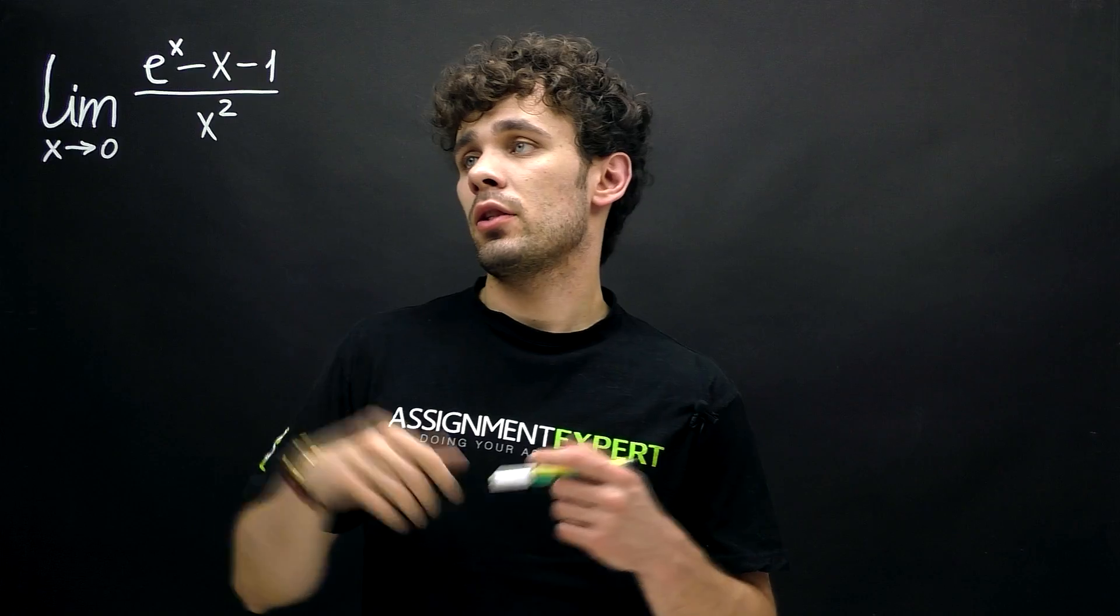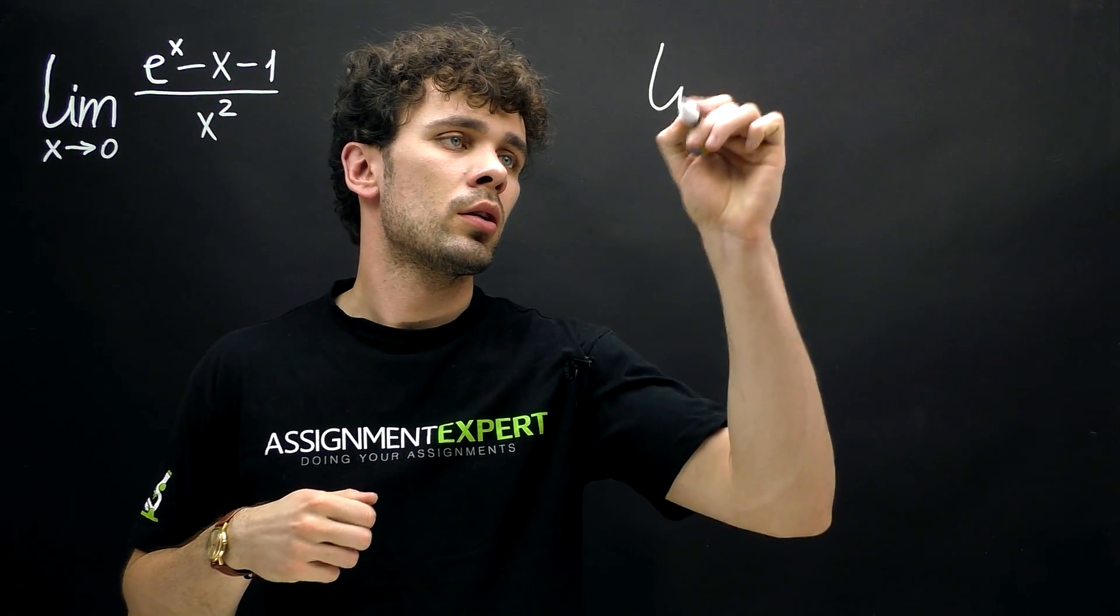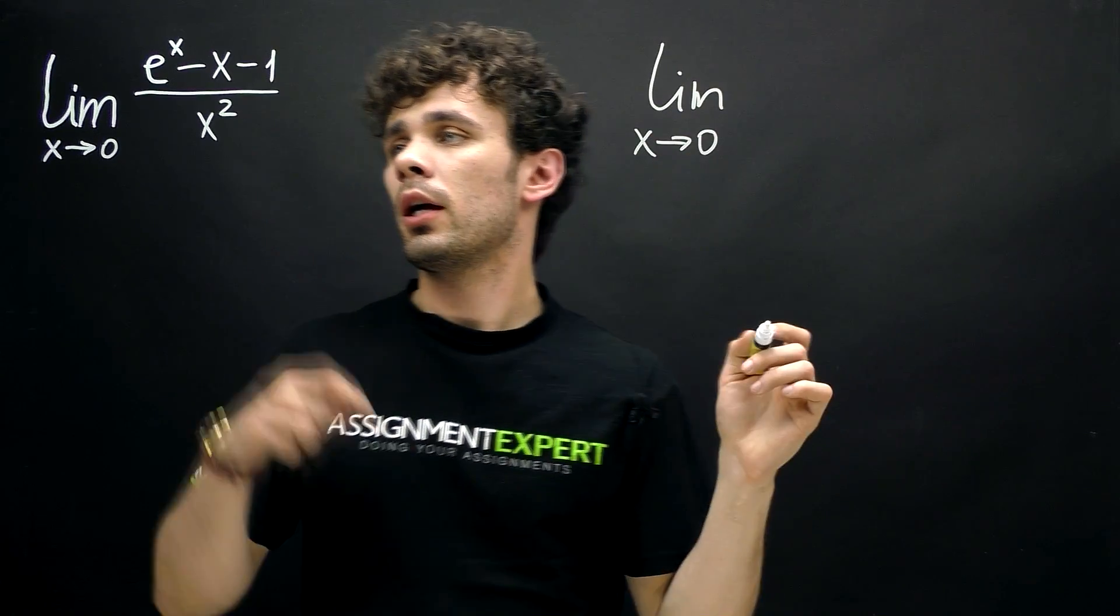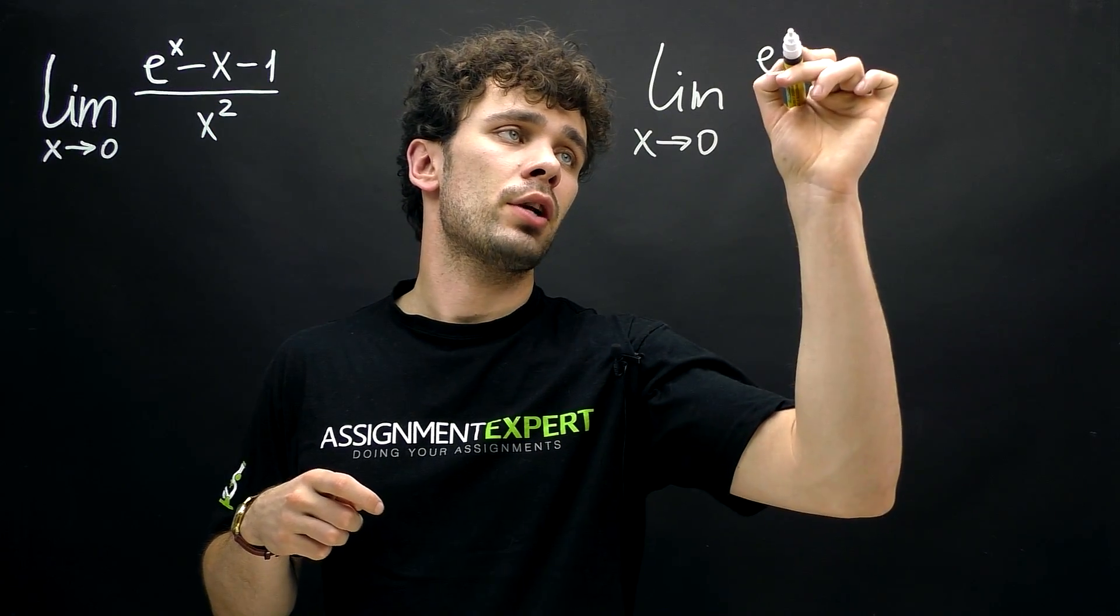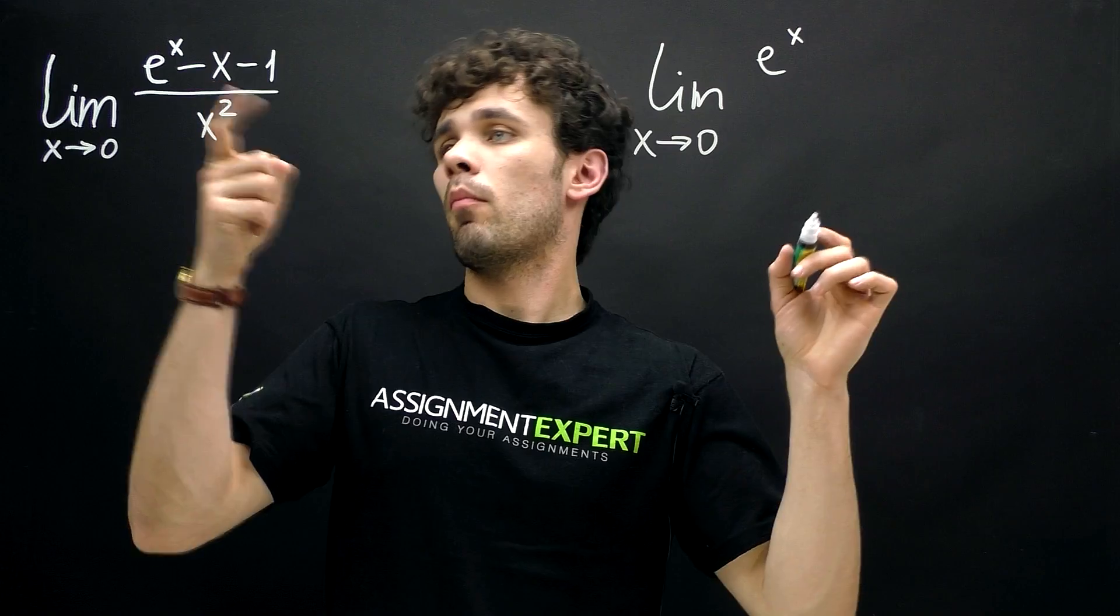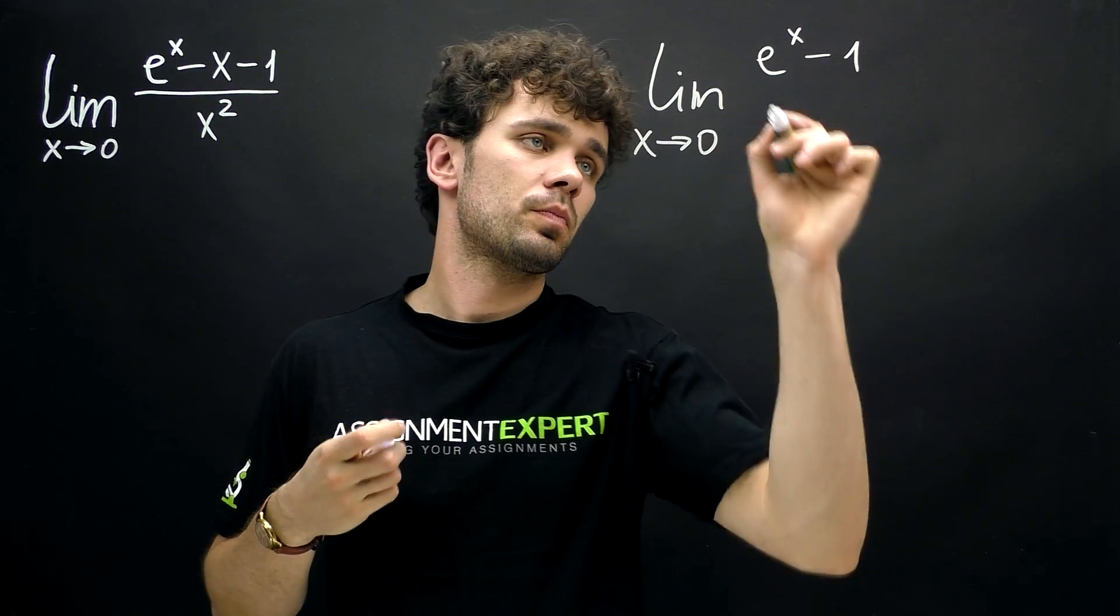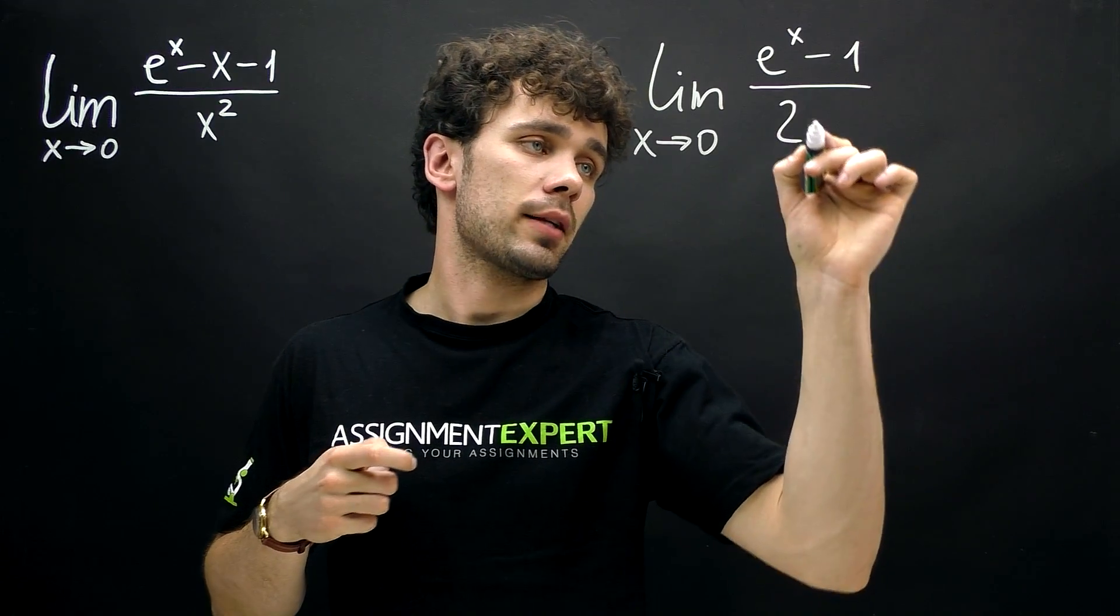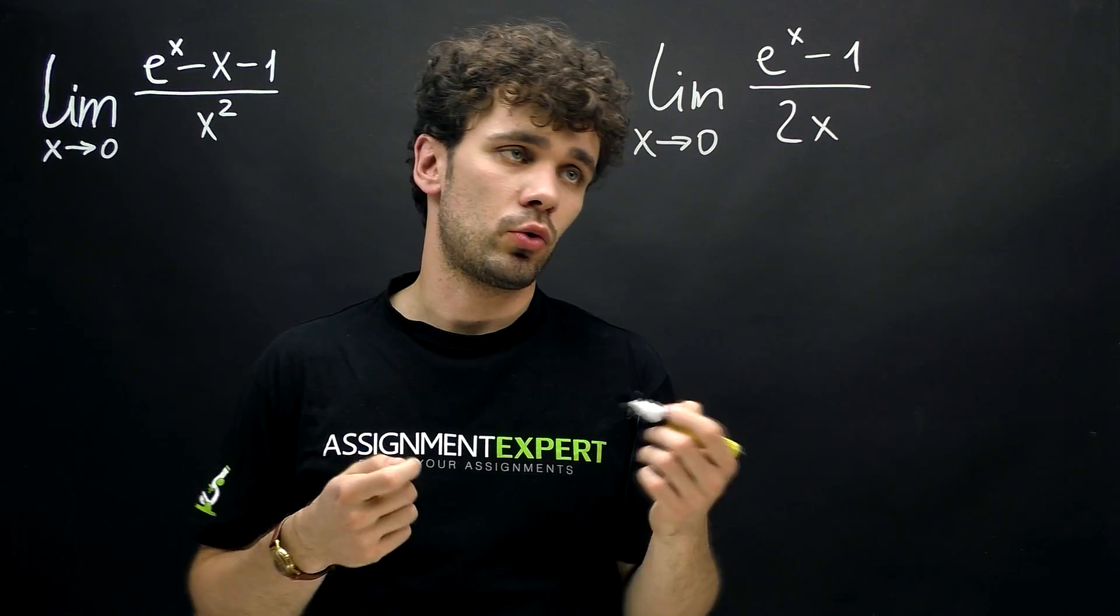Now, let's find derivatives of numerator and denominator. So we will get limits for x tends to zero. And in the numerator we'll get e raised to the x power minus 1 and negative 1 gives us zero. And in the denominator we get 2x. So this limit exists and we applied L'Hospital's rule.